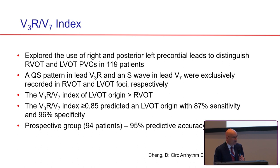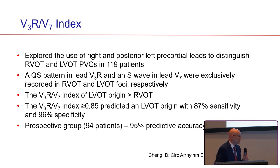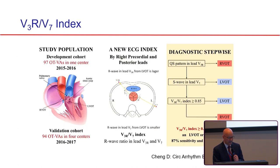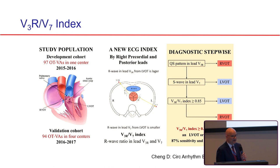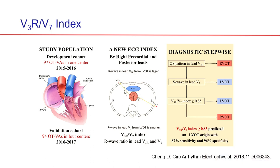In a prospective group of 94 patients, there was 95% predictive accuracy using this rule, which outperformed several other algorithms. This makes intuitive sense—if you had that large a difference between recording sites, it would be very easy to distinguish left versus right origin.